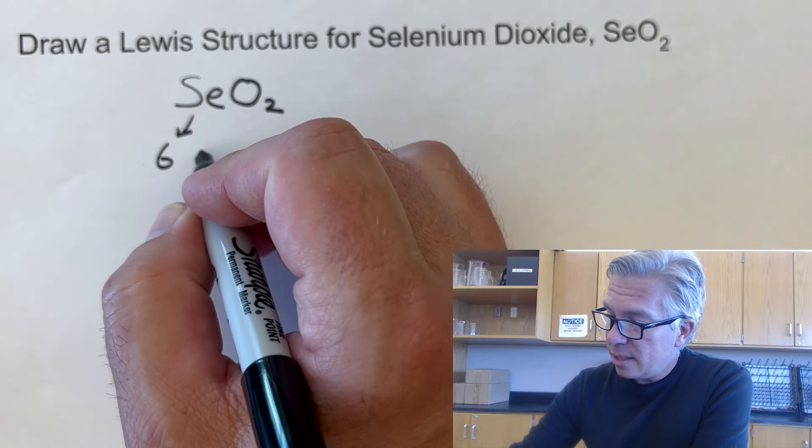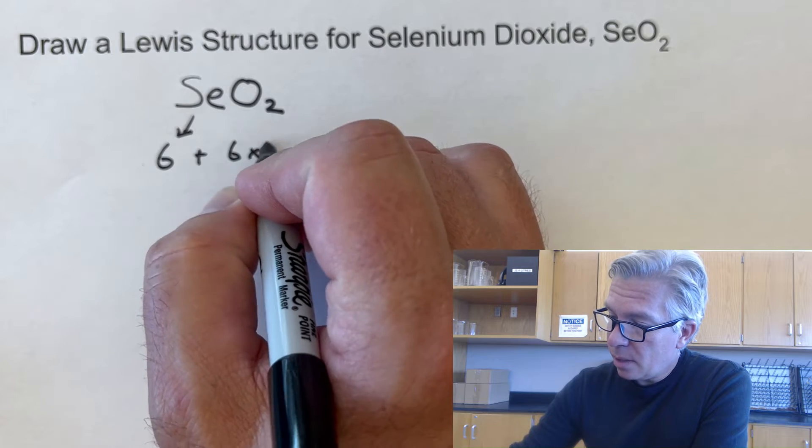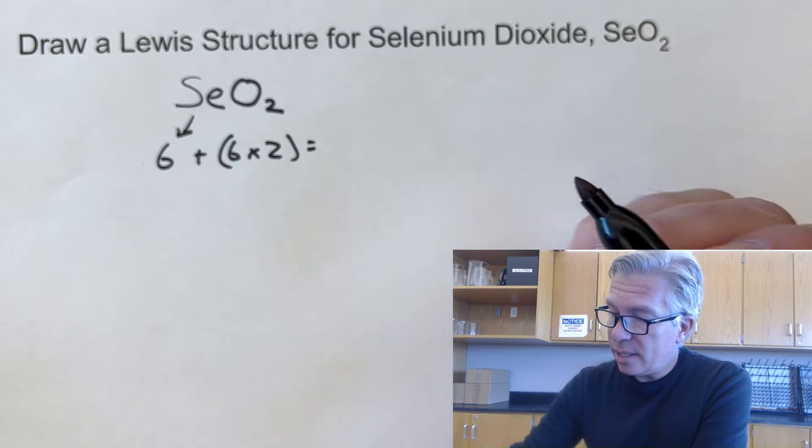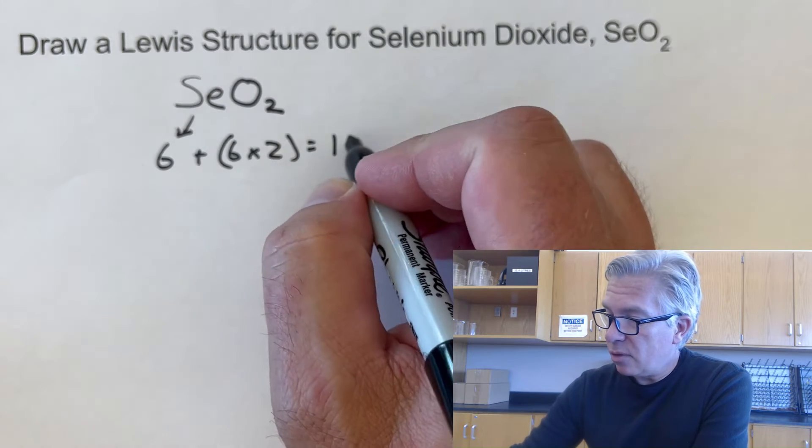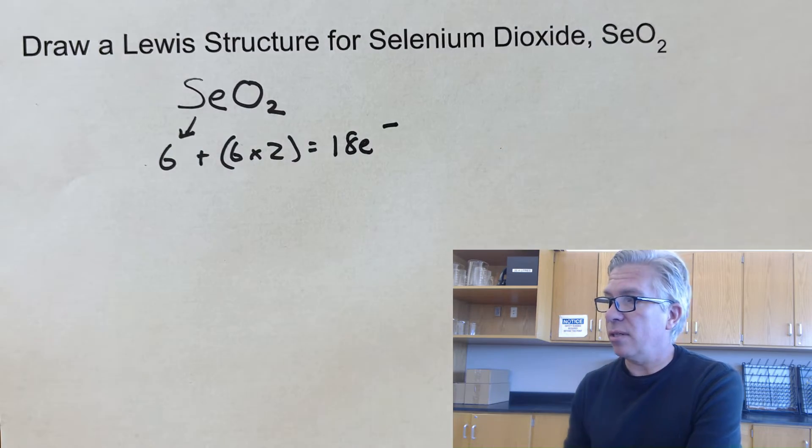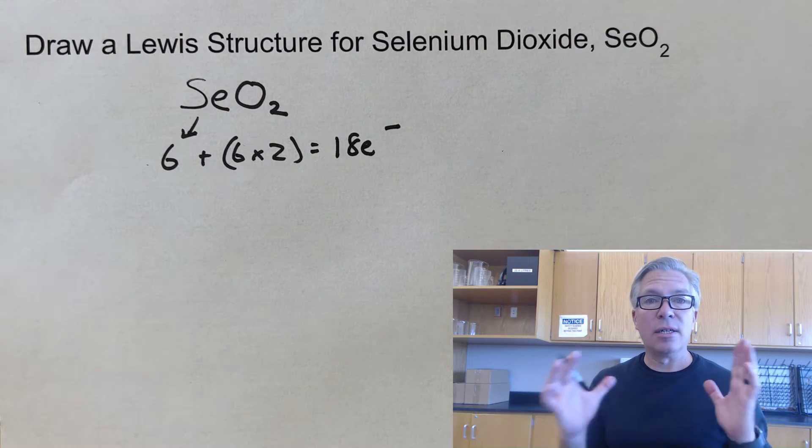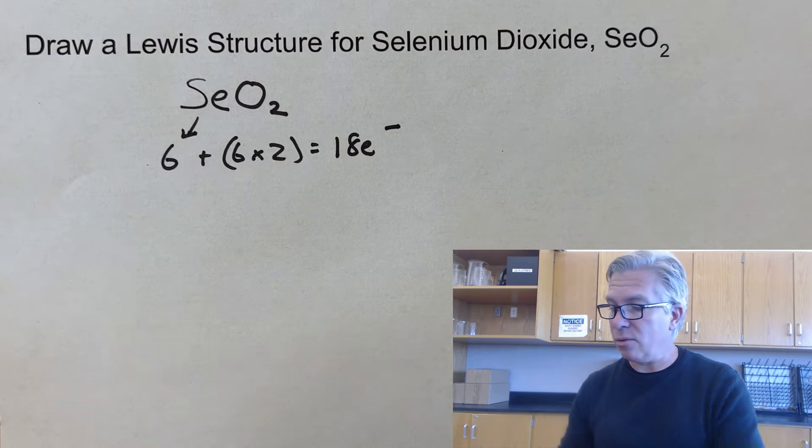But it has 6, it's in the 6th tall column. And so it has 6 valence electrons, so does oxygen, for a total of 18 electrons. That's what we have. That's our pool of electrons to do whatever we need to do with to make this molecule happy.